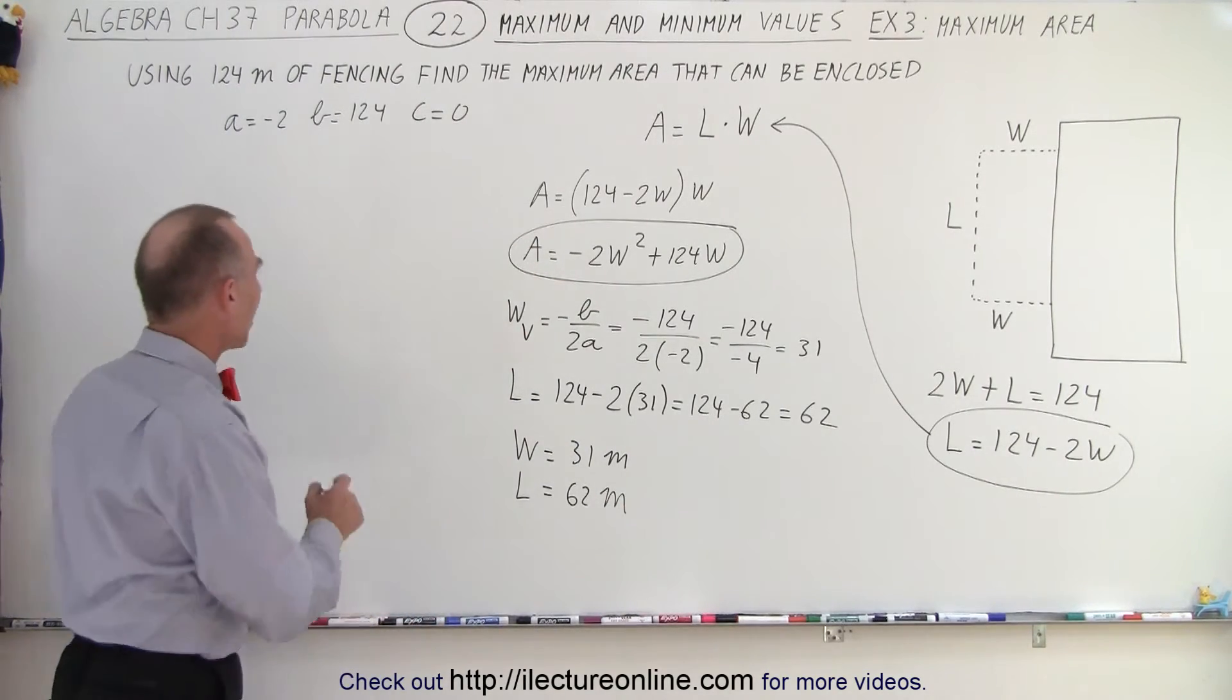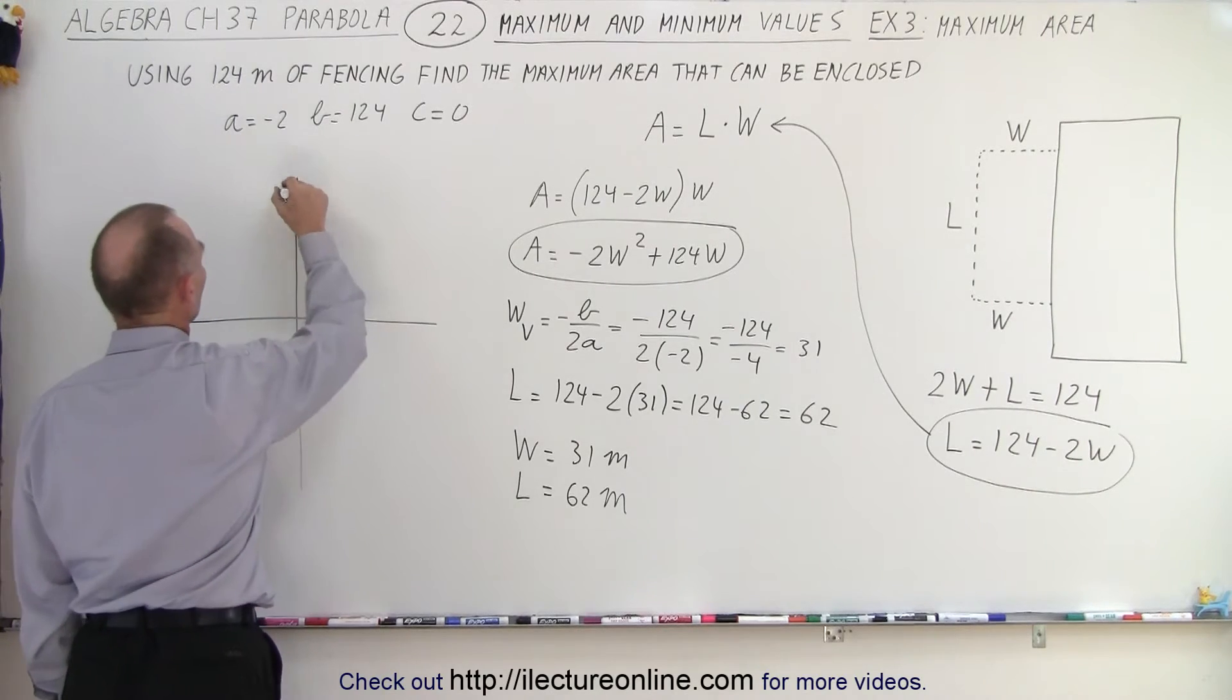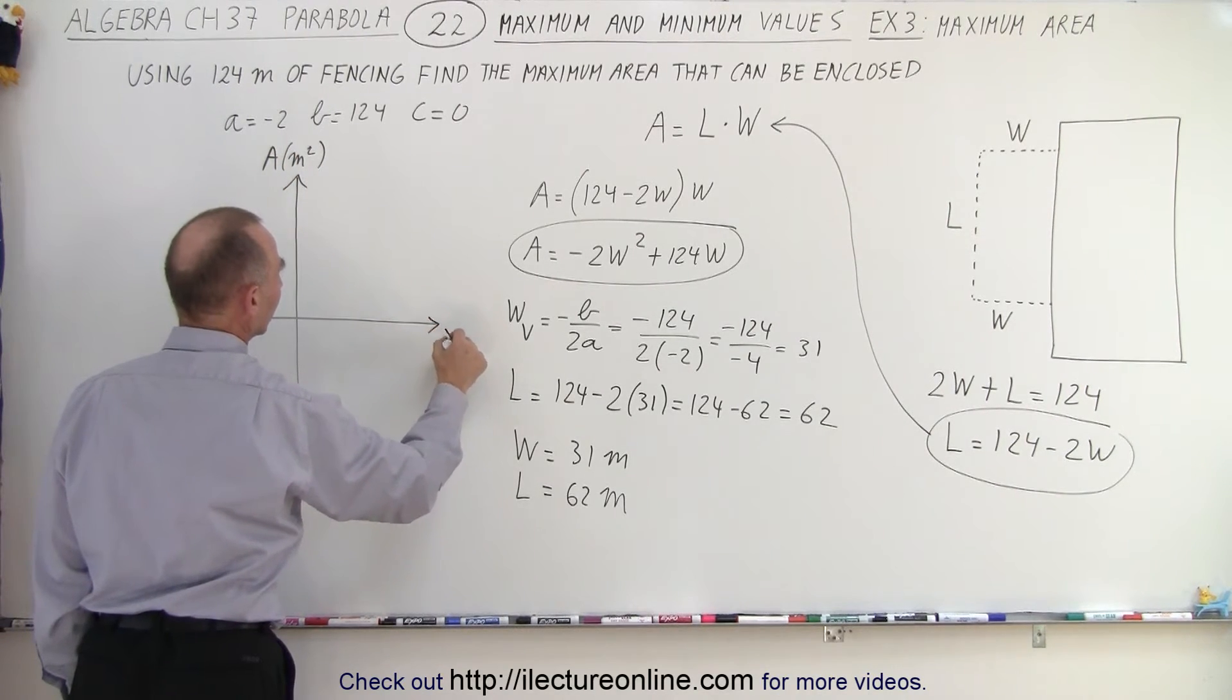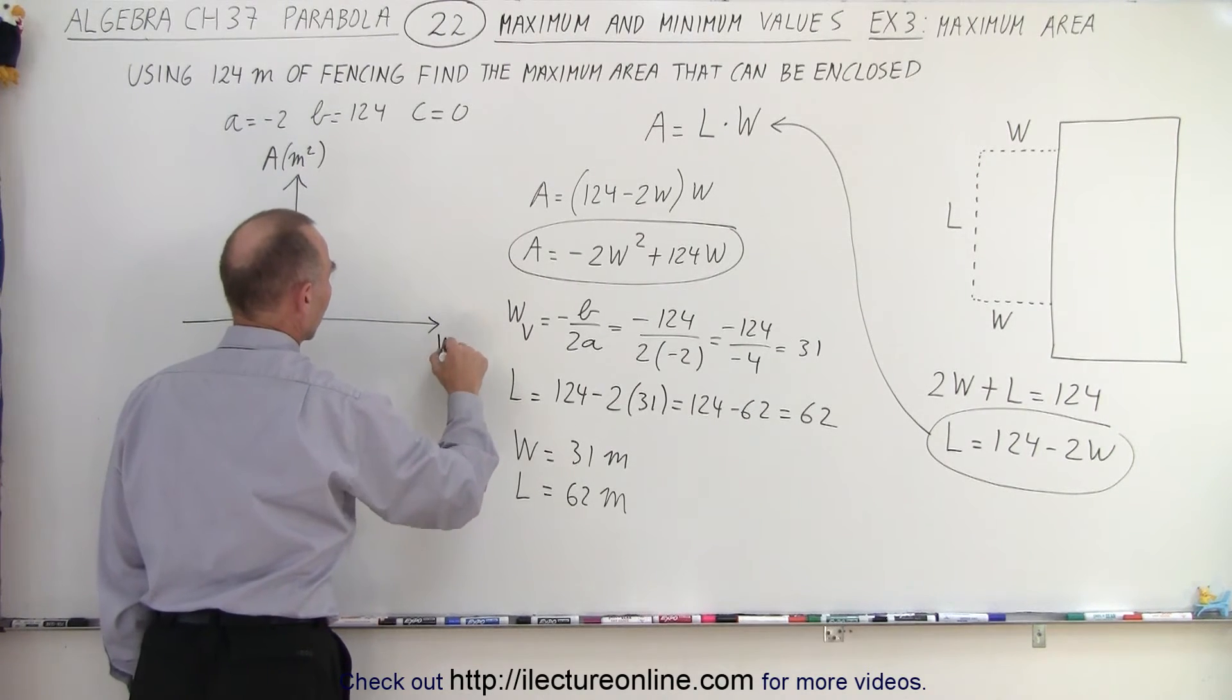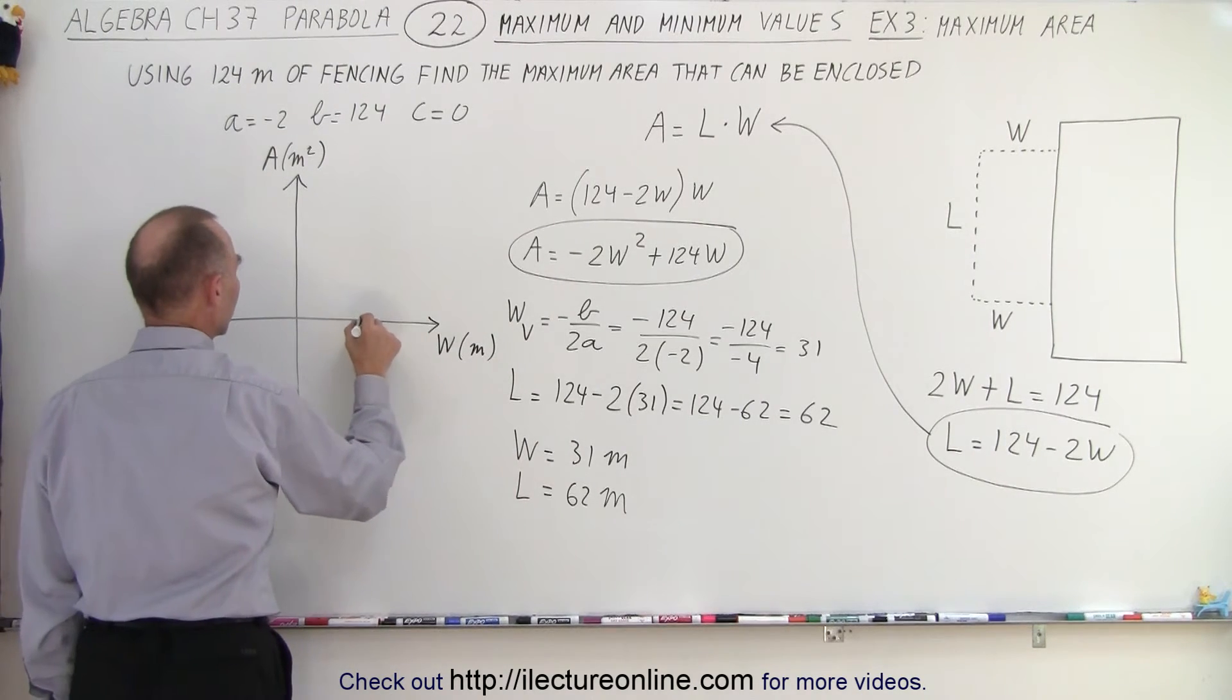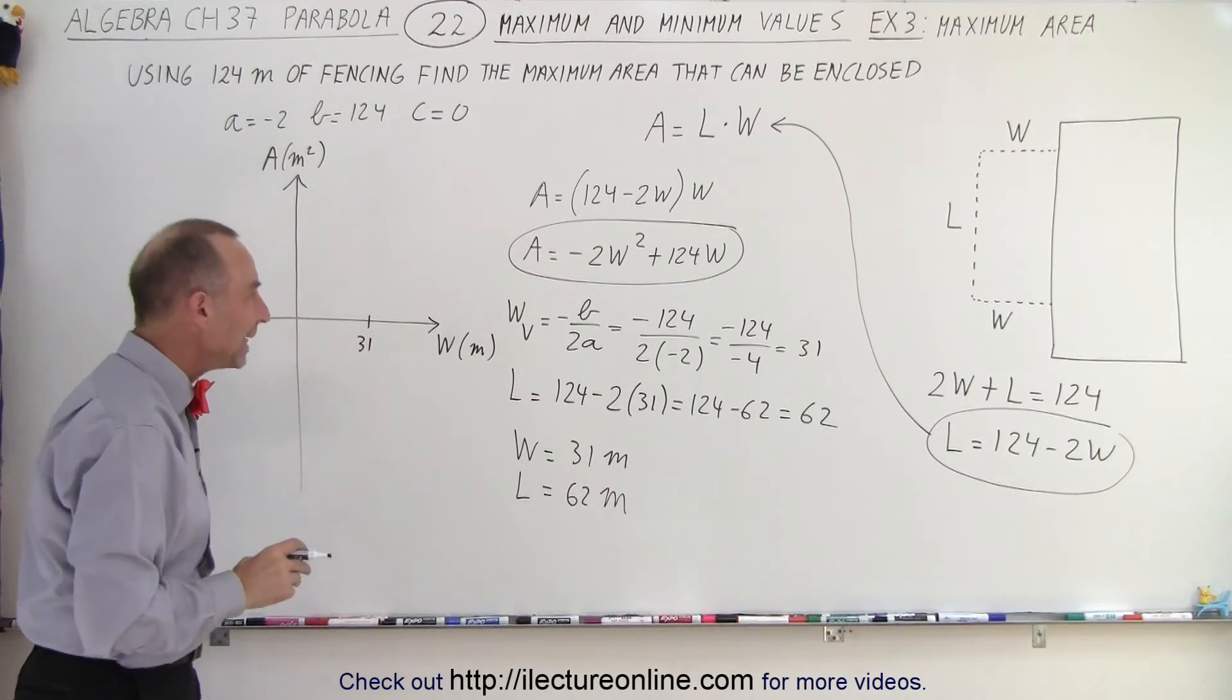What will the graph look like when we graph that? Well, let's give that a try. So on the vertical axis, we're going to have area that's going to be in meters squared. And on the horizontal axis, we're going to let that equal the width, which is going to be in meters. And notice when the width is 31 meters, that would be right over here, 31. Then what would be the area?